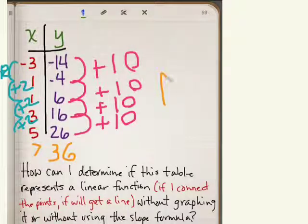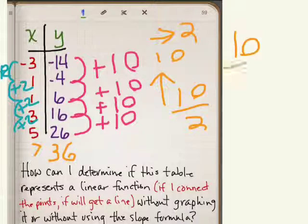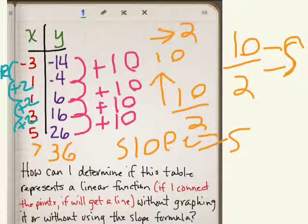The rise is 10 and the run is 2. All you really have to do is 10 over 2, which is also 10 halves, which is just equivalent to 5. So really, the slope is 5.